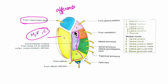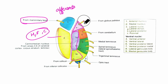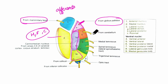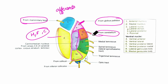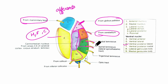Looking at the ventral nuclei: the ventral anterior nucleus mainly receives afferents from the globus pallidus. The ventral lateral nucleus receives afferents from the cerebellum. Then the ventral posterolateral nucleus receives impulses from the spinal lemniscus and medial lemniscus, as shown here. It receives impulses from the medial lemniscus and spinal lemniscus.